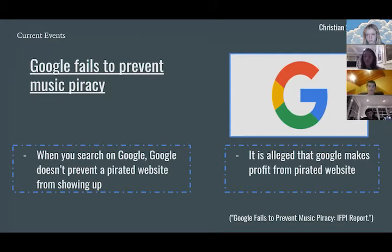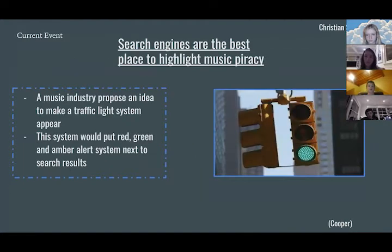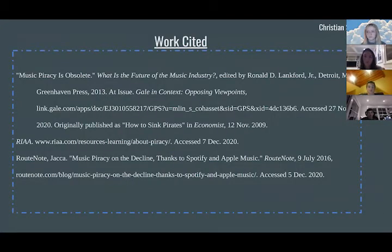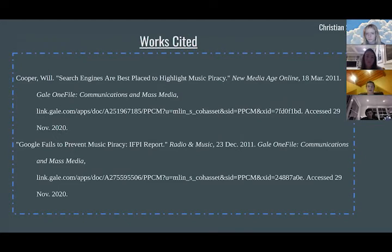The music industry proposed a traffic light system. The system would put red, green, and amber alerts next to search results. The traffic light system would highlight any illegal and copyright-infringing music sites. The system would organize the web rather than legalize it, so it wouldn't take any illegal websites away. Google says they would be happy to use the system.